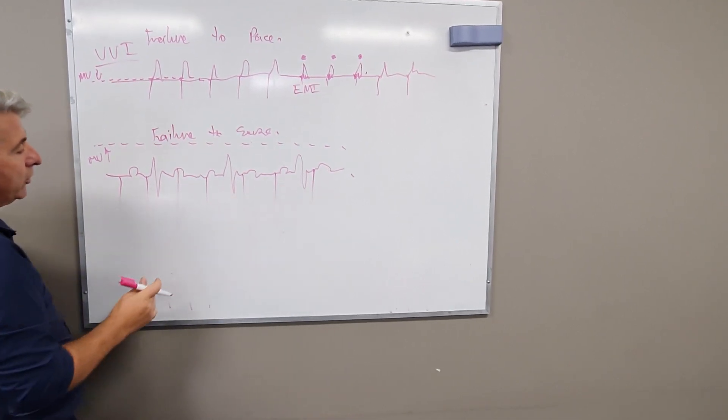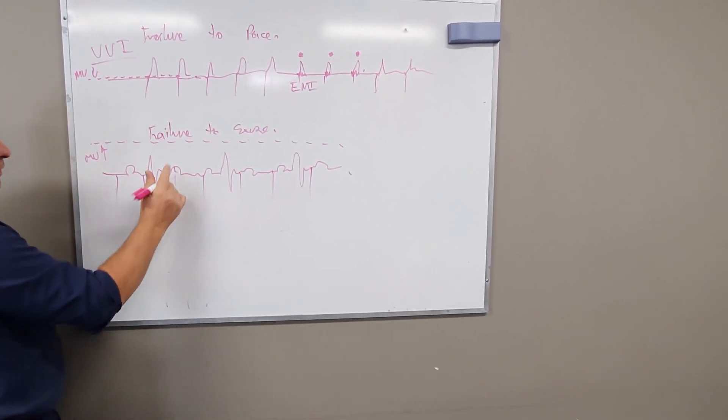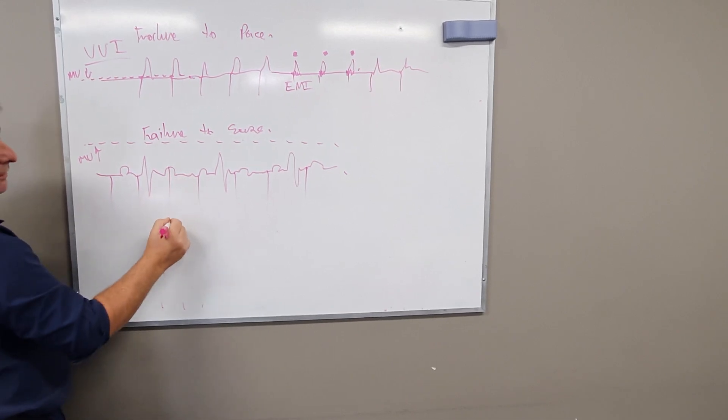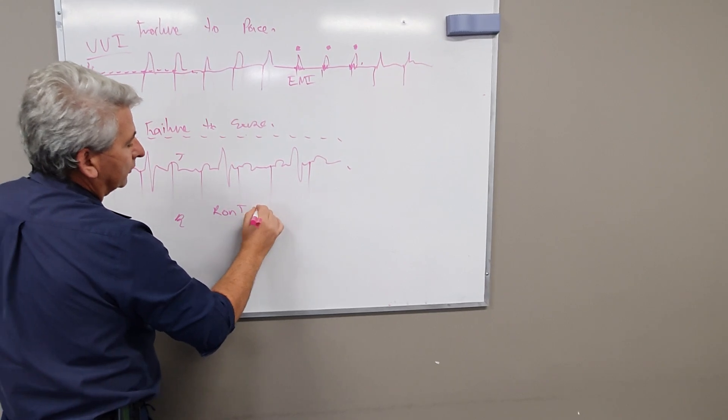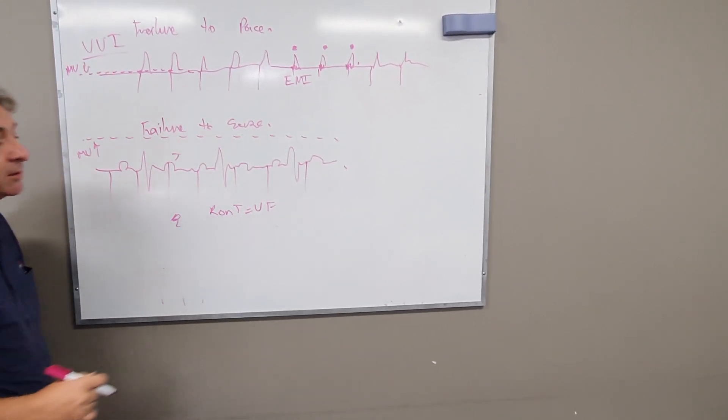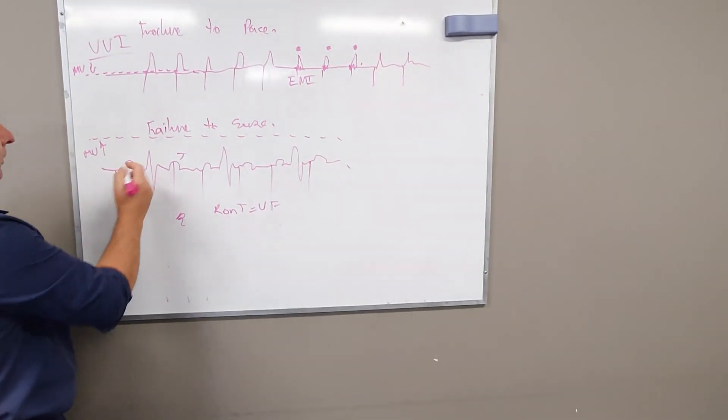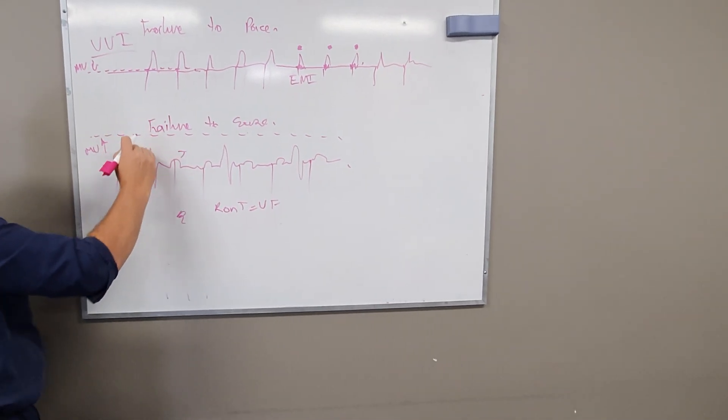Now this isn't capturing because it's not on enough, but here is what we call the R on T. So this is the R, that's your T wave. R on T will usually equal something entertaining. So what you need to do is bring the fence down or bring the millivolts down.